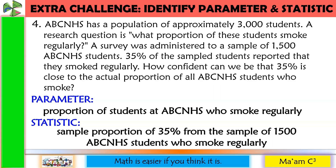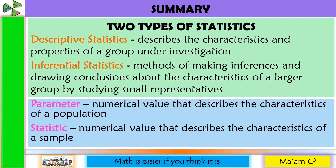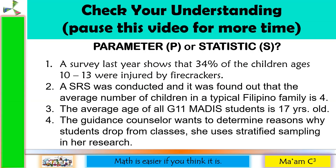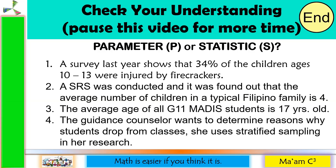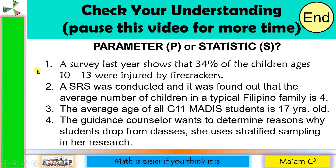So we had examples for mean or average, standard deviation, and proportion. Now it is time to check your understanding. Let us identify the following as parameter (P) or statistic (S). Number one: a survey last year shows that 34% of children ages 10 to 13 were injured by firecrackers. Here is a technique — if it is a survey, then it means this is just a sample. If it is a sample, then this is a statistic. If it were the whole population, the word would be 'census,' not 'survey.'